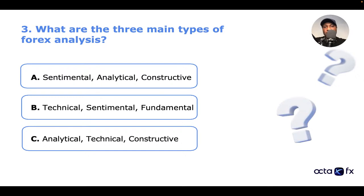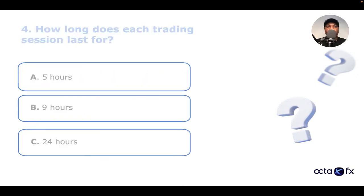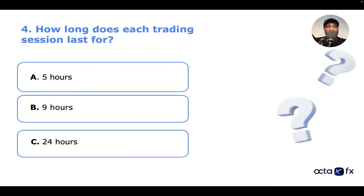Only one option can be correct and I'll review that in the second part. Moving to question four: how long does each trading session last for? A: five hours. B: nine hours. C: 24 hours. If you know the correct answer, type it in the comments.